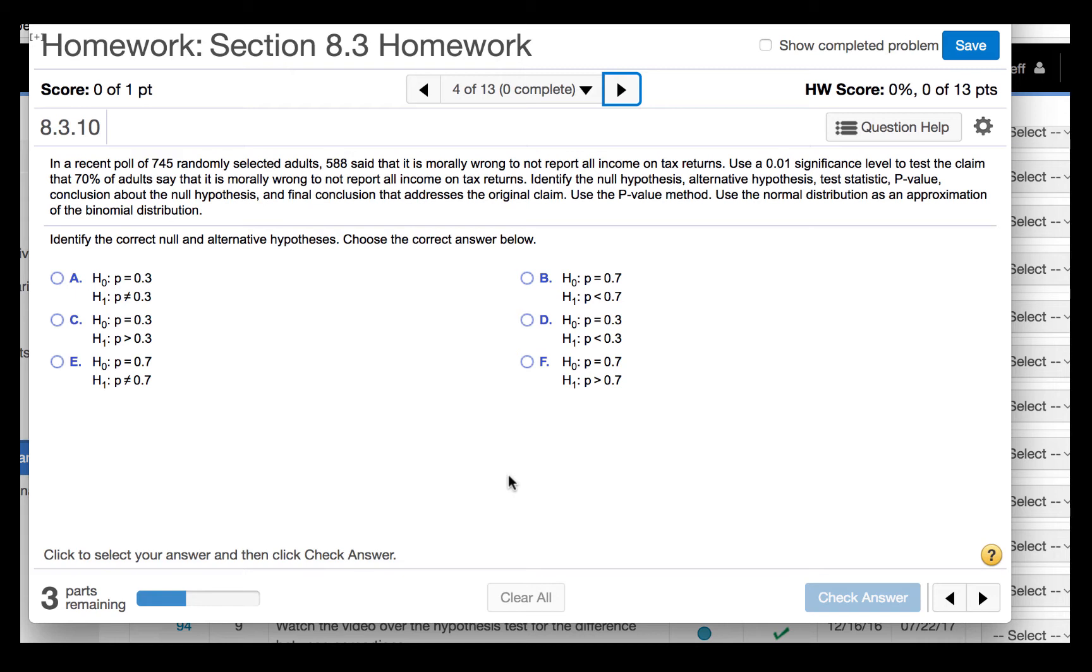Identify the null hypothesis, alternative hypothesis, test statistic, p-value, conclusion about the null hypothesis, and final conclusion that addresses the original claim. Use the p-value method. Use the normal distribution as an approximation of the binomial distribution.